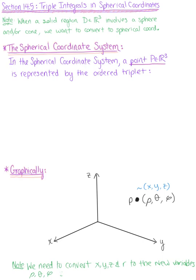In the spherical coordinate system, a point P in R3 is represented by the following ordered triplet: rho, theta, phi.